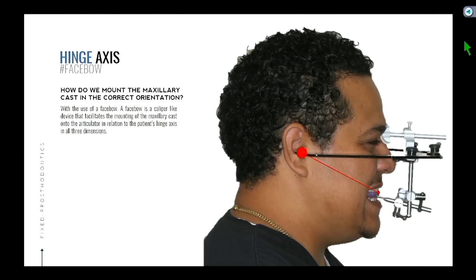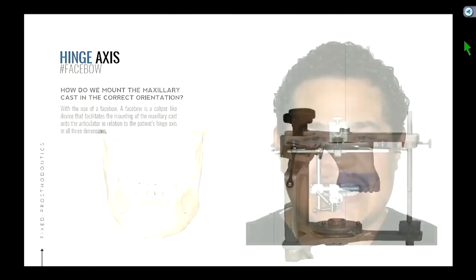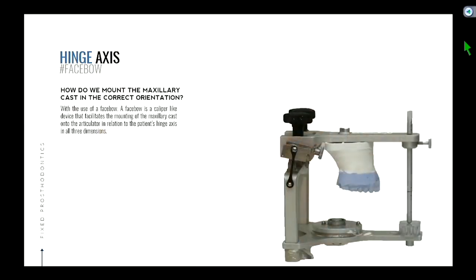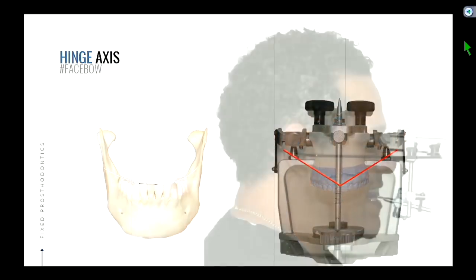The face bow is that device that looks like a torture device — like something Bane wears. It's a caliper-like device that facilitates mounting the maxillary cast onto the articulator in relation to the patient's hinge axis in all three dimensions. Think of it as a measuring device. It captures what is the distance from the condyle to where the teeth are. Not only in the sagittal view, but also from the frontal view — so if your maxillary jaw were five millimeters off the midline, that cast should reflect that on the articulator.